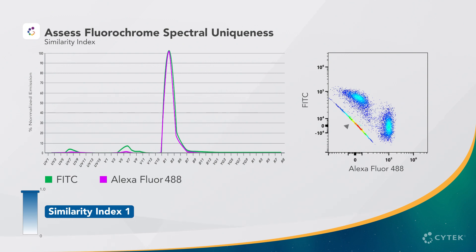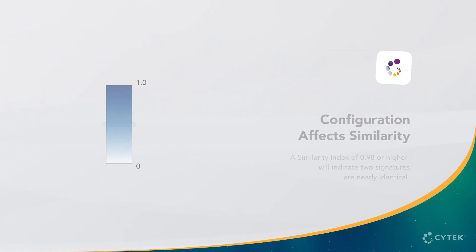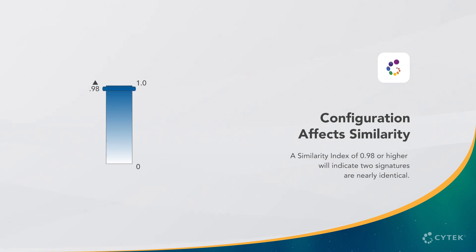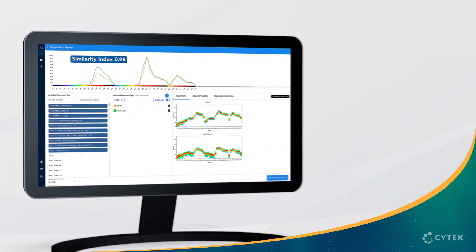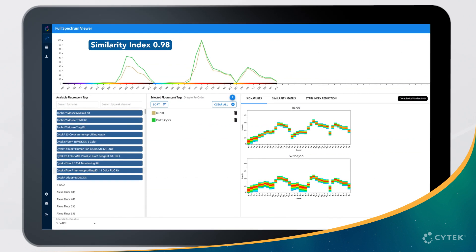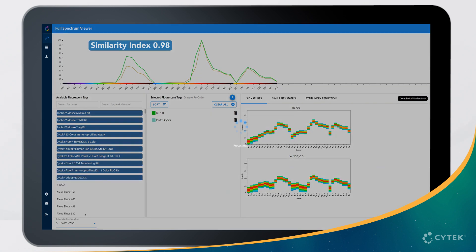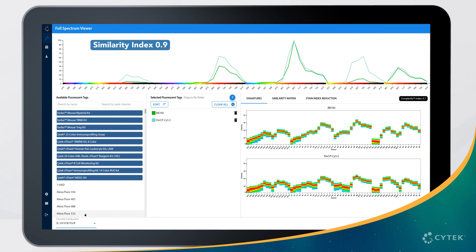In this data plot, we observe distortion of the negative population and the resolution of each single positive population is severely compromised. In general, a similarity index of 0.98 or higher will indicate two signatures are nearly identical and that the corresponding dyes cannot be used in combination. It's also important to note that the similarity of two fluorochromes can change depending on the instrument configuration. For example, the similarity of BB700 and PerCP-Cy5.5 is higher on a 3-laser Aurora without ultraviolet and yellow-green lasers compared to a full 5-laser configuration.